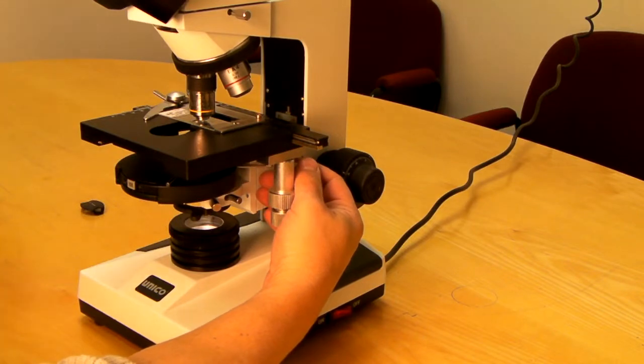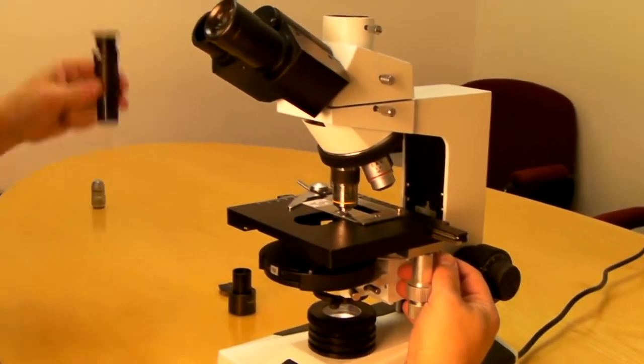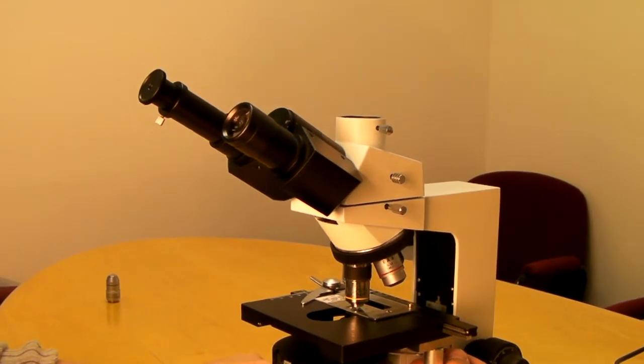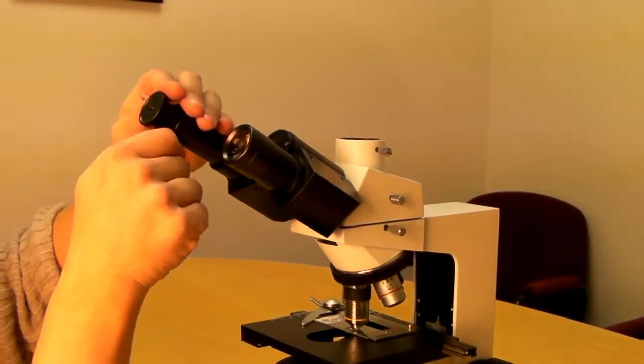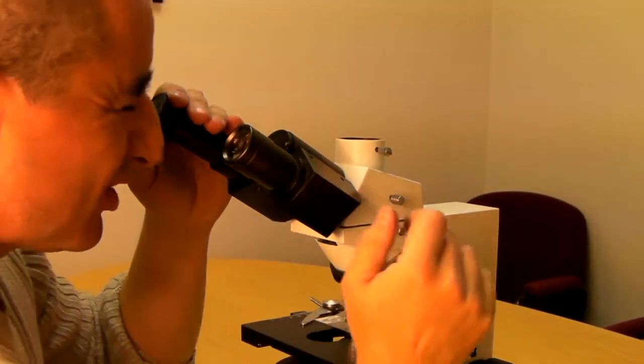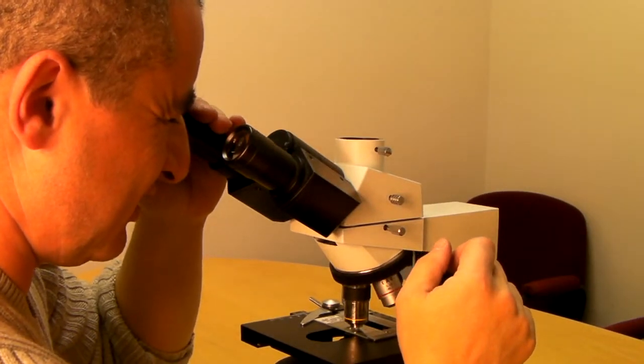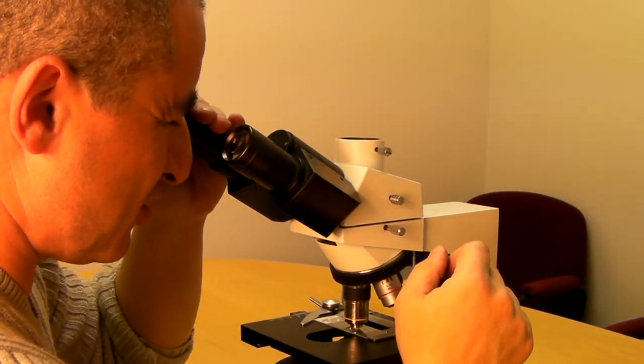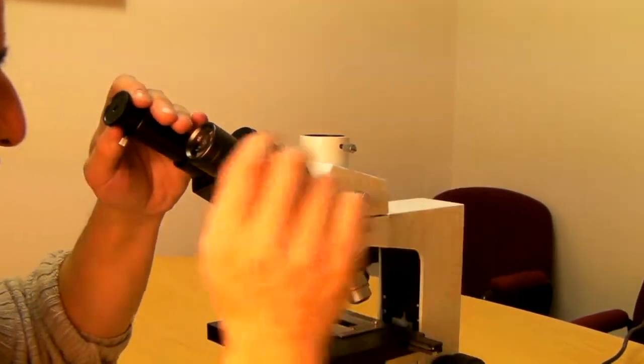Now we need to place the centering telescope first. What you need to do is look inside and make sure you will see a bright ring in sharp focus.